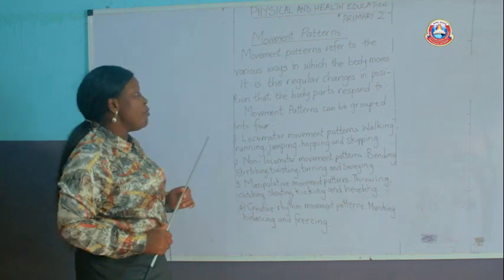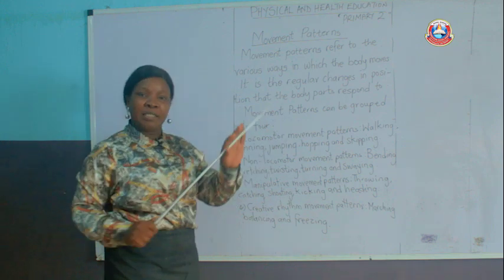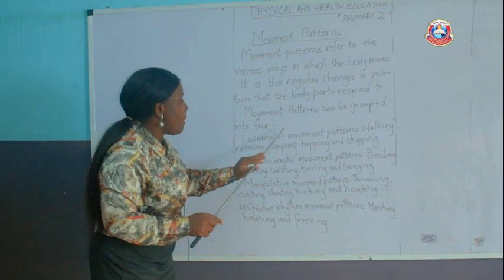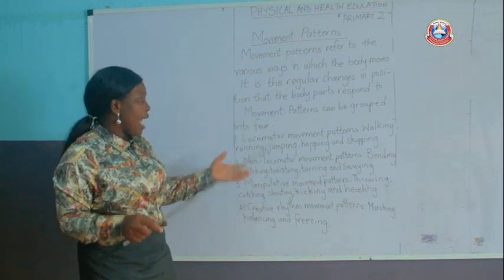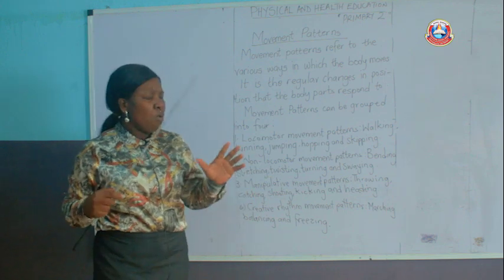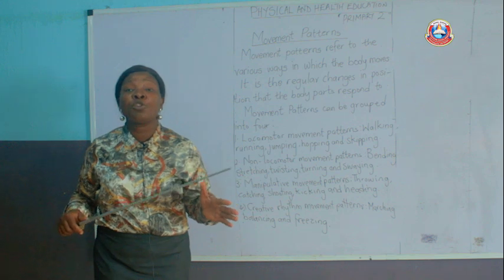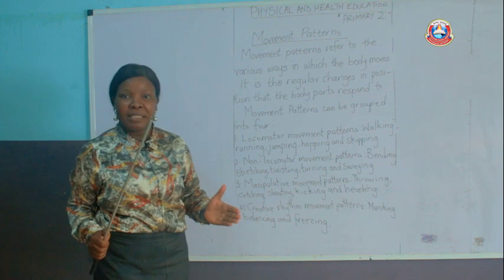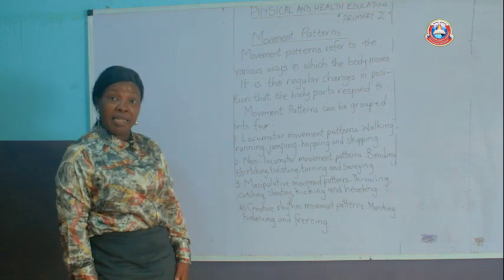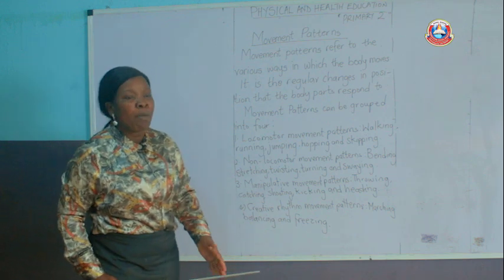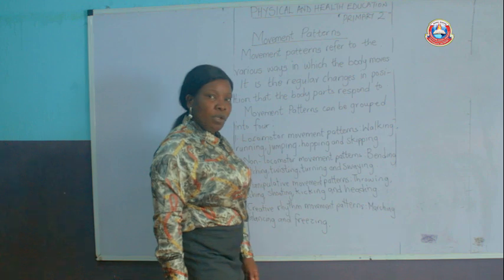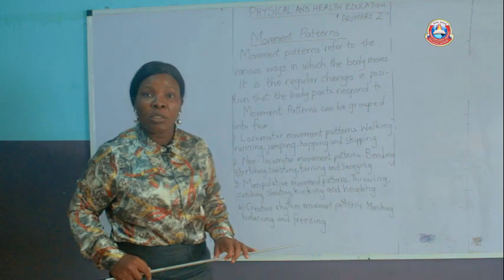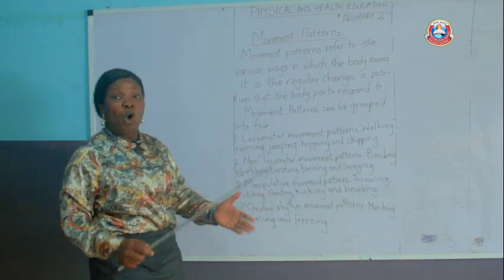The very first type of movement pattern is the locomotive movement pattern. This movement involves moving the whole body. For instance, I am standing here and I want to make this kind of movement — I am walking, actually moving the whole of my body.